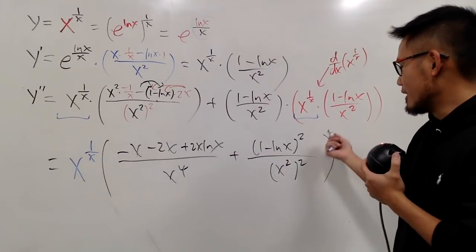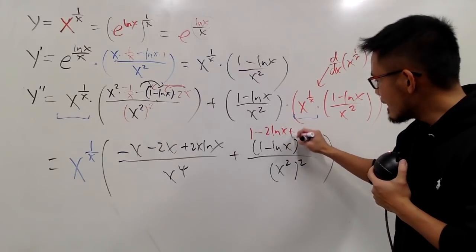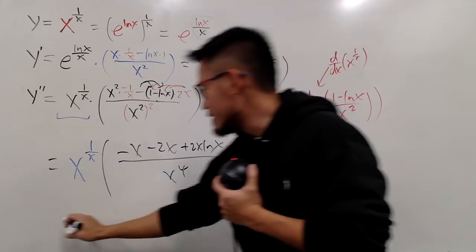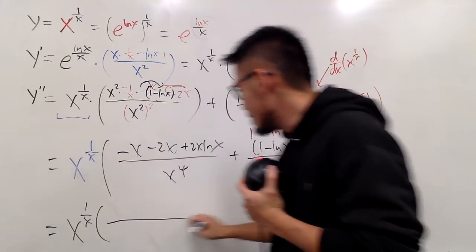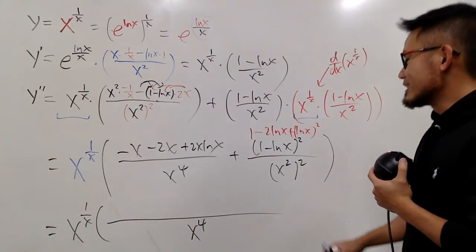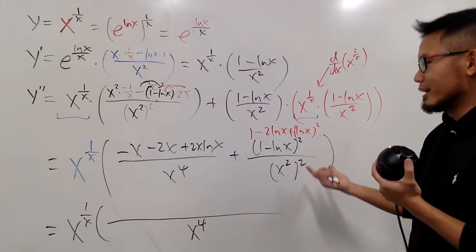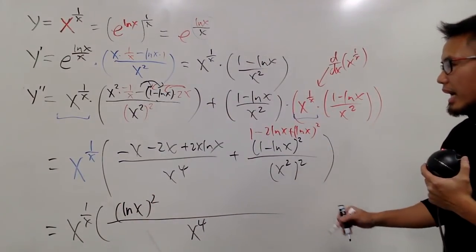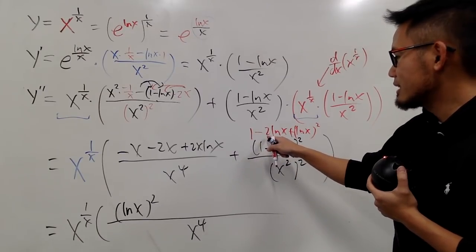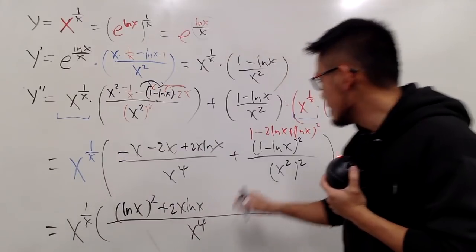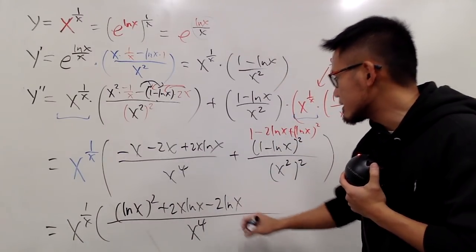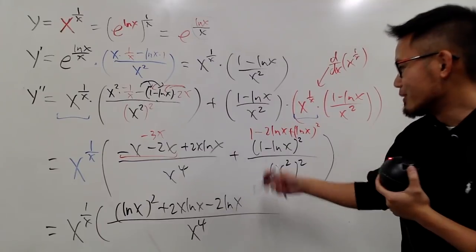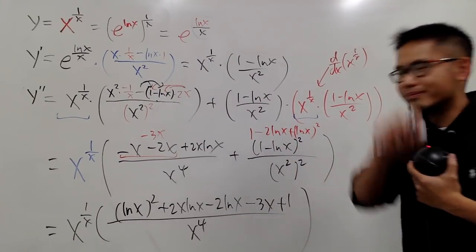We can expand 1 minus ln x squared as 1 minus 2 ln x plus ln x squared. Combining everything with x to the 1 over x factored out over x to the 4th on the bottom: we have ln x squared, plus 2x ln x, minus 2 ln x. Combining the x terms: negative 2x and negative x together give negative 3x, plus 1. So the final second derivative is x to the 1 over x, times the quantity ln x squared plus 2x ln x minus 2 ln x minus 3x plus 1, all over x to the 4th.